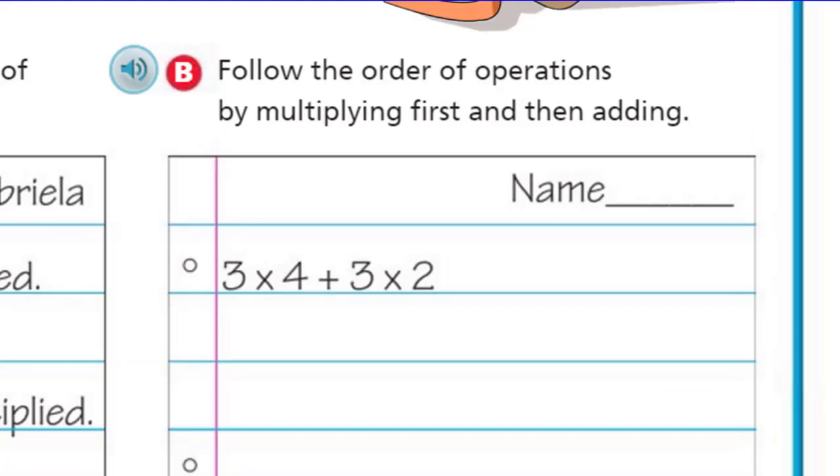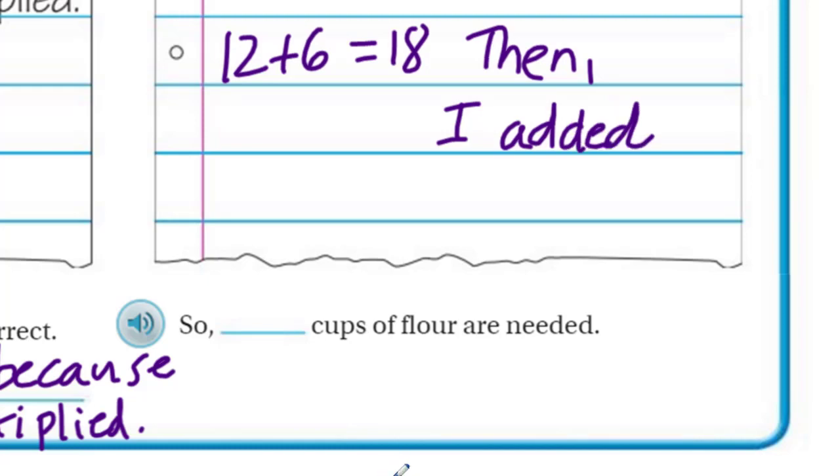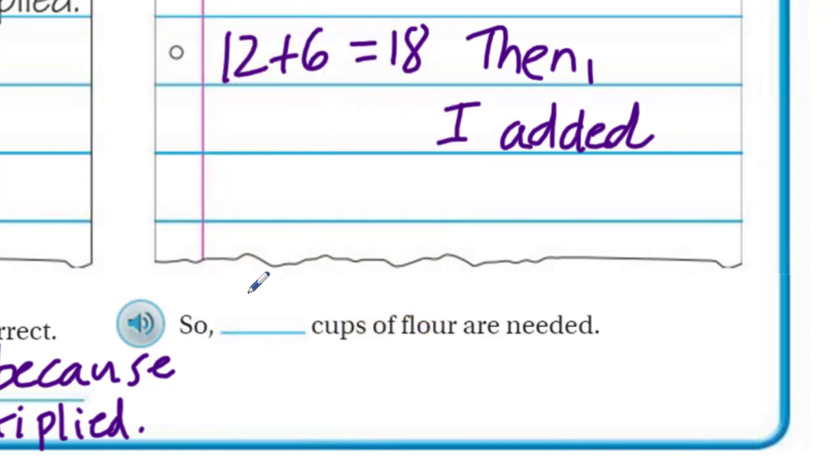Now it says follow the order of operations by multiplying first and then adding. Let's put us. We're together, you guys. Fifth graders rock. Now, 3 times 4 plus 3 times 2 means we have to multiply first. So 3 times 4 is 12. Put my plus there. 3 times 2 is 6. And look at that. First, I multiplied. And then, I'm going to be taking my 12 plus 6, which is equal to 18. Then, I added. So that would mean that 18 cups of flour are needed. That was pretty fast, that first page. Let's move on.